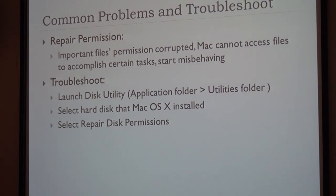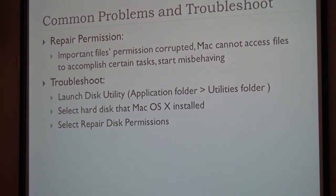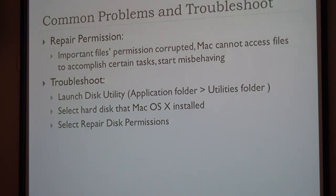Secondly, we have the repair permissions problem. The symptom is that important file permissions are corrupted, so Mac cannot access files to accomplish certain tasks and starts misbehaving. To troubleshoot, launch Disk Utility — go to the Applications folder, find Utilities, or just type Disk Utility in the Mac search bar. Then select the hard disk where Mac OS X is installed and select Repair Disk Permissions. That should restore normal operation.